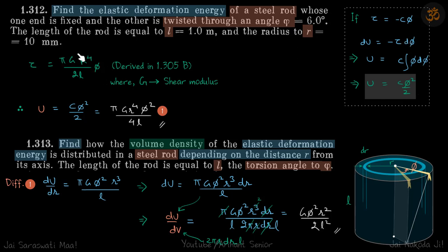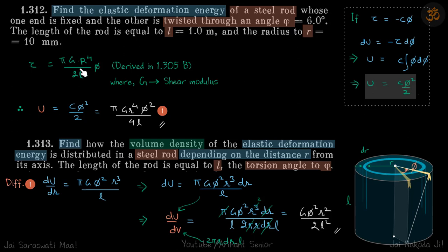This is the formula derived in problem 1.305, where twisting a rod by angle phi gives the required torque. In this formula G is the shear modulus. The energy stored is simply C·phi² / 2, where C is taken from the 1.305 formula and substituted to get the final answer.